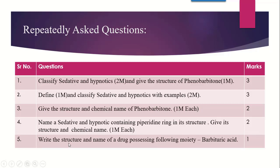Question number 5: write the structure and name of the drug possessing the following moiety. Here again comes Phenobarbitone. Notice how many different ways they have asked about it — previously a straightforward question about the structure, and here they ask to draw the structure of the drug possessing the barbituric acid moiety. The moiety is what Phenobarbitone contains, so the answer is the same: you draw the structure of Phenobarbitone. It is asked in a different way, but drawing the structure carries 1 mark.